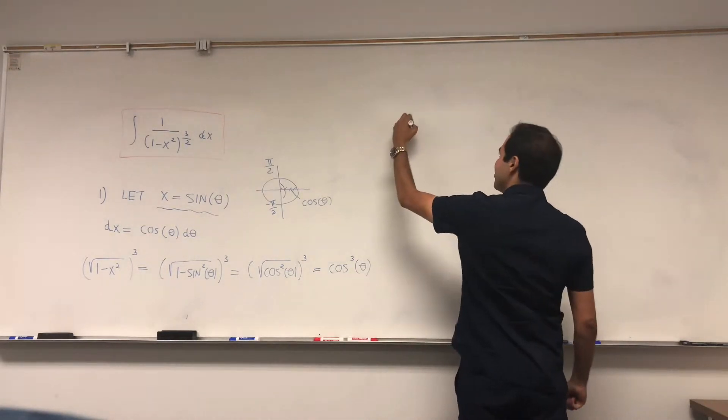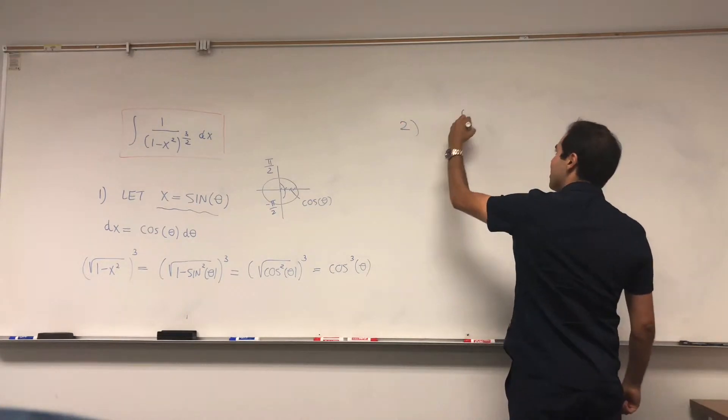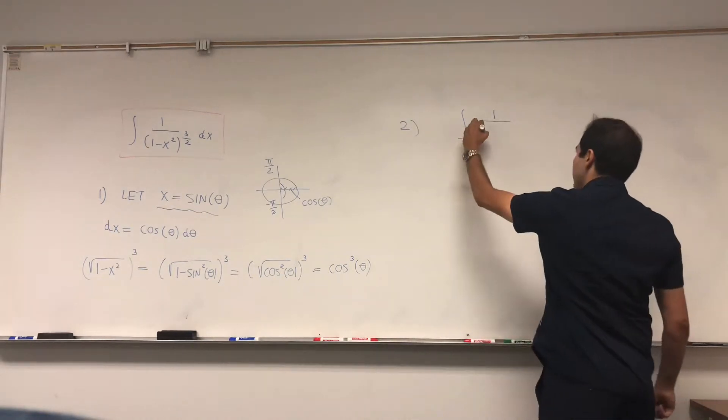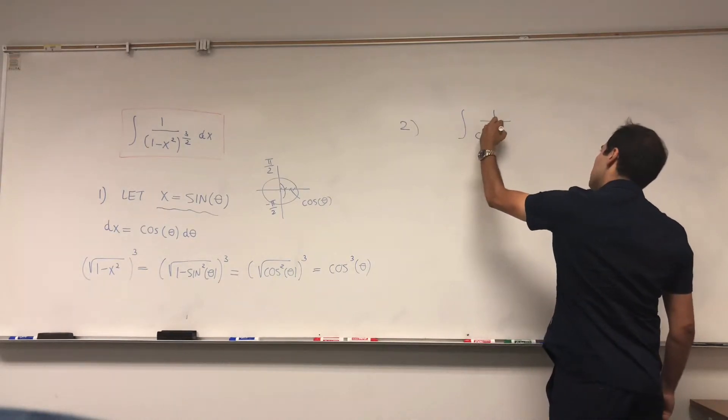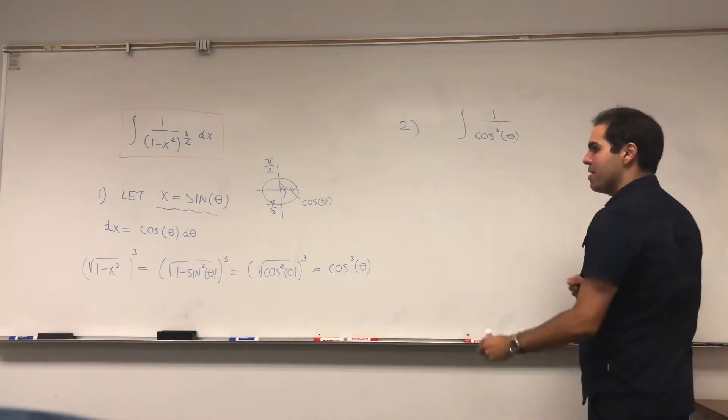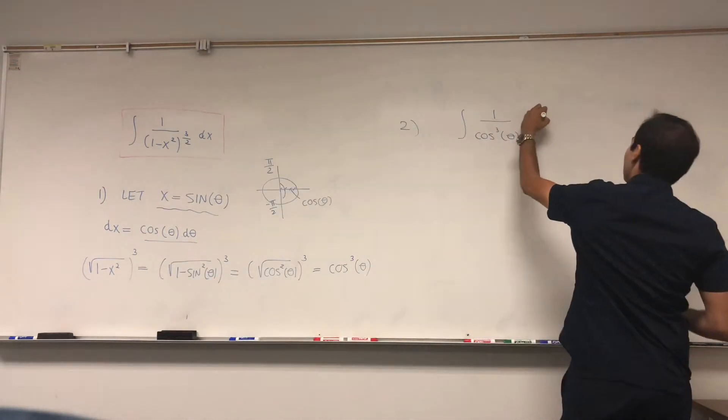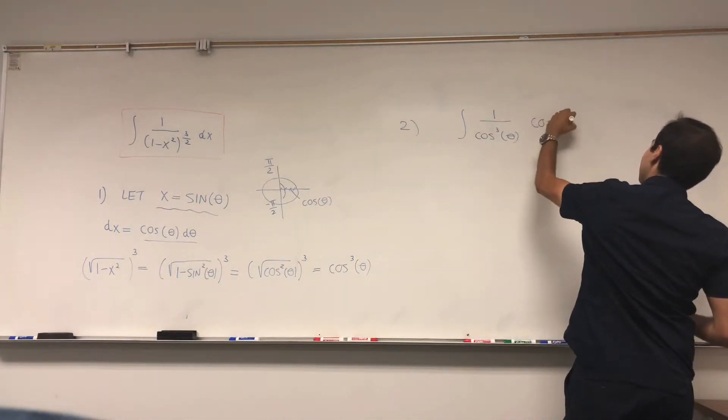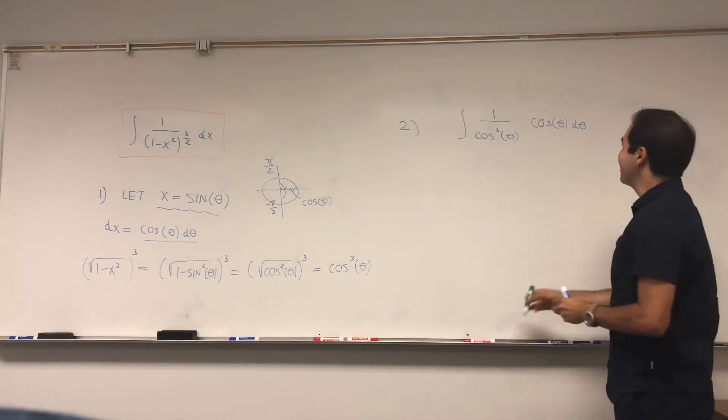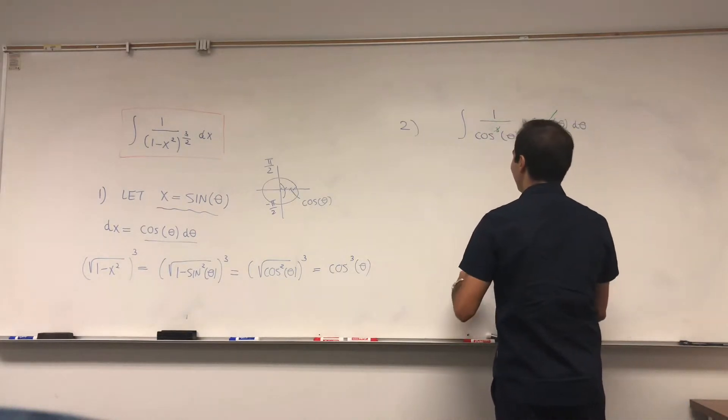That's good, we have all our ingredients. Therefore, our integral becomes the integral of 1 over cosine cubed theta, and that's not all—the dx is cosine of theta d theta. So it's times cosine of theta d theta. How nice! One of the cosines cancels out, and you're left with 1 over cosine squared theta d theta.